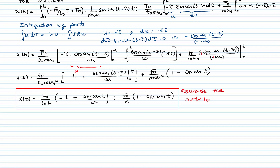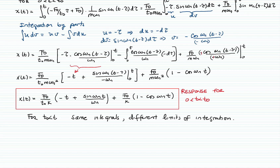Now I handle the second time interval, t > t₀. Since the function is zero beyond t₀, the integral only runs from 0 to t₀ — the integrand is the same function, just with different limits of integration. So I rewrite the same integral but now evaluated from 0 to t₀.